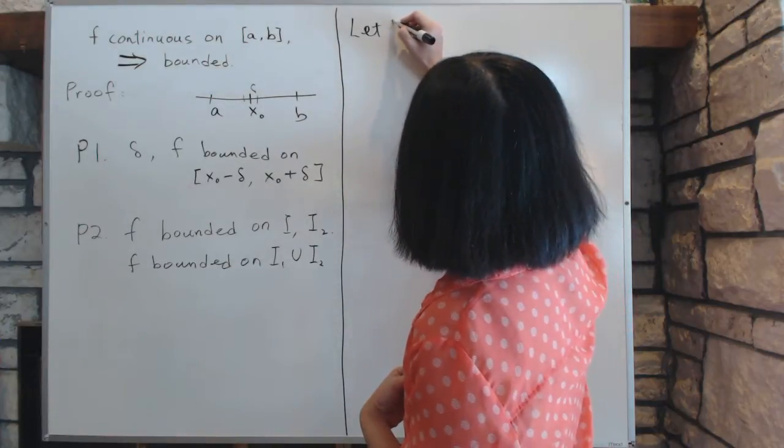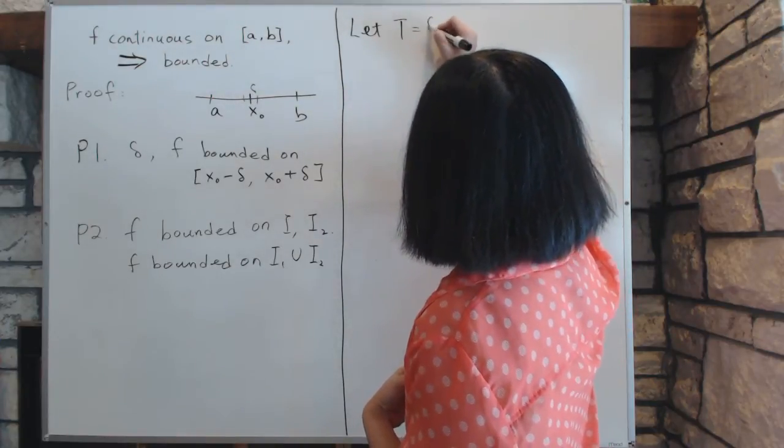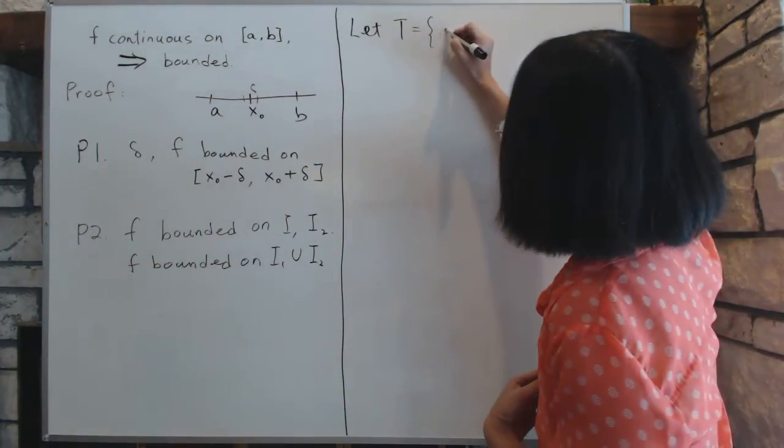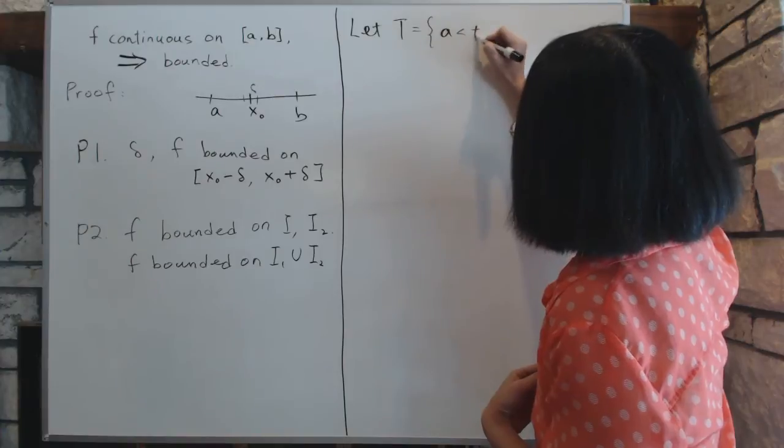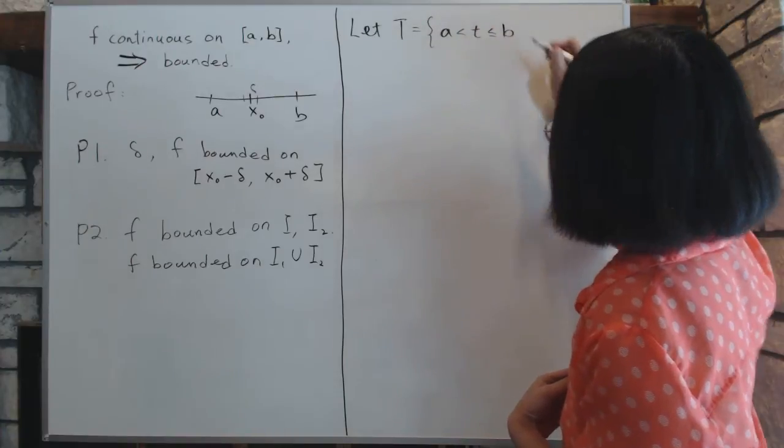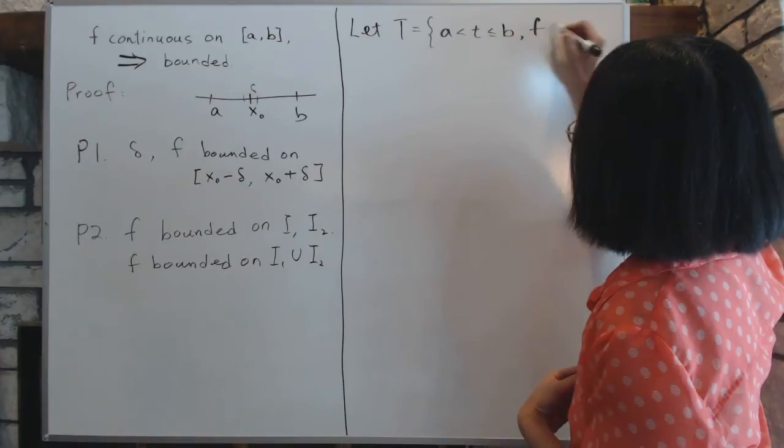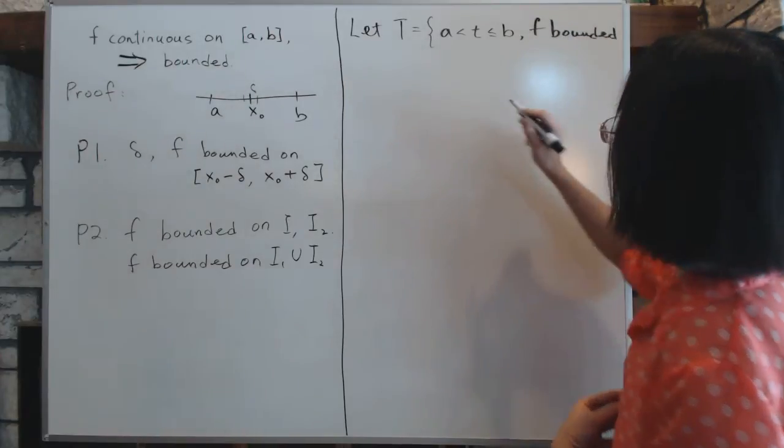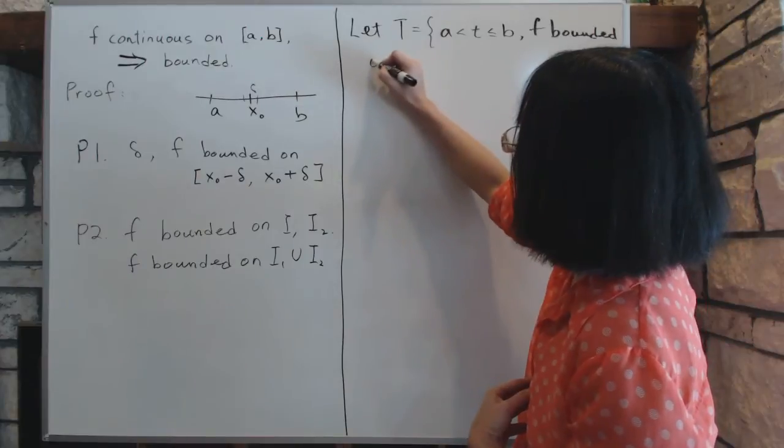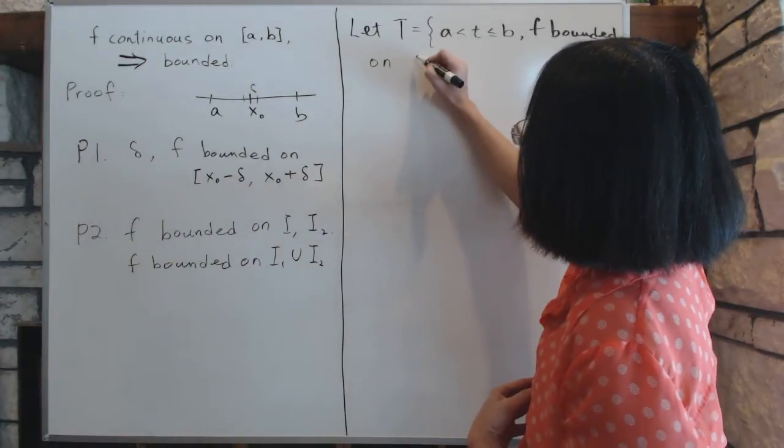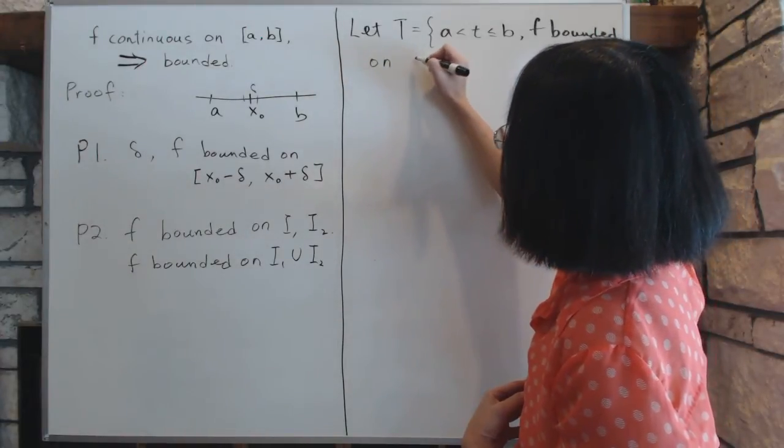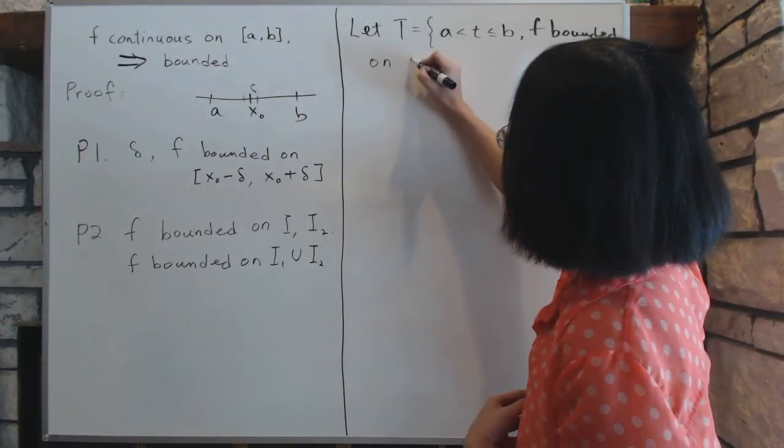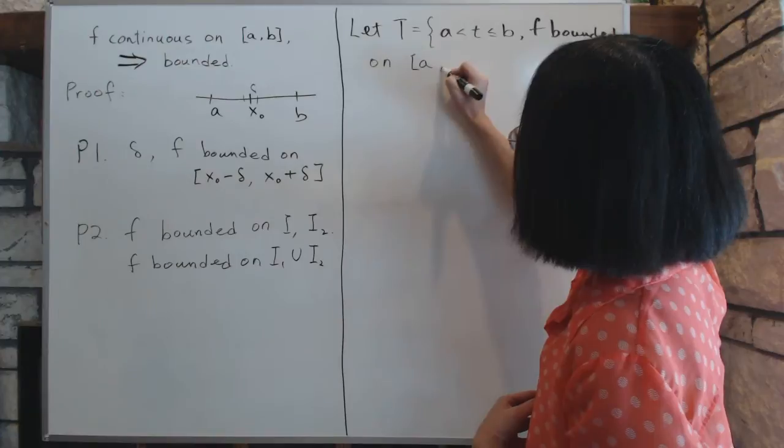So let's define a set T. The set T is the collection of all elements, all numbers, that's bigger than a and smaller than or equal to b, such that f is bounded on the interval from a to t.